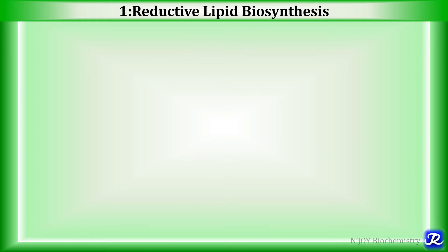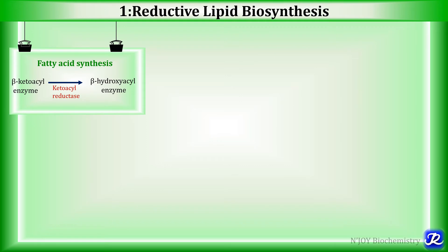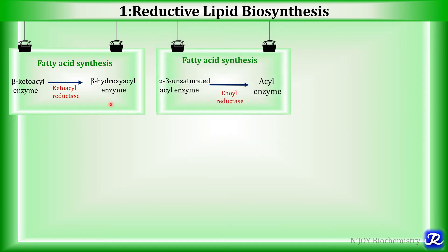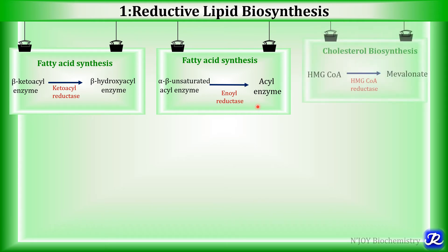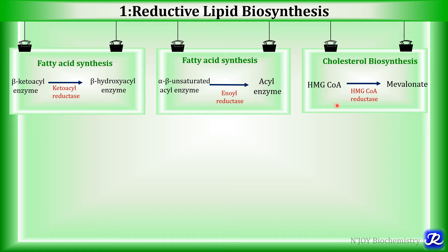NADPH acts as a reductant in lipid biosynthesis. In fatty acid synthesis, NADPH is required in the reaction catalyzed by ketoacyl reductase, where beta-ketoacyl enzyme is converted to beta-hydroxyacyl enzyme. The second reaction requiring NADPH is conversion of alpha-beta unsaturated acyl enzyme to acyl enzyme by enoyl reductase. In cholesterol biosynthesis, the conversion of HMG-CoA to mevalonate catalyzed by HMG-CoA reductase also requires NADPH as reductant.